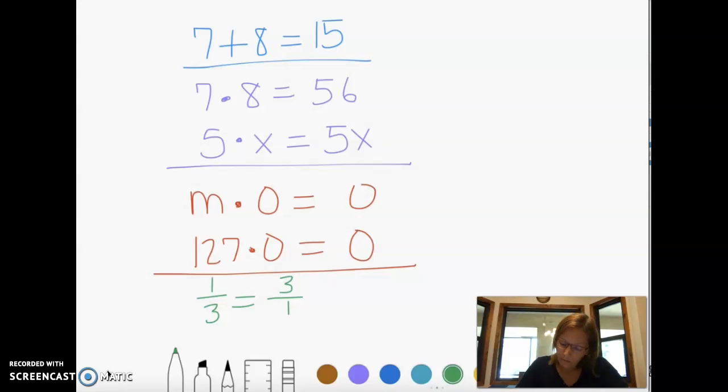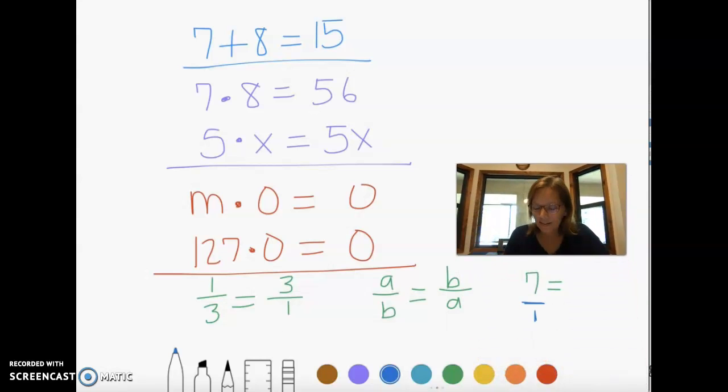The reciprocal of a over b equals b over a. I'm just flipping the fraction. And sometimes you might just see a number. Like maybe they just say 7 and tell me what the reciprocal is. So when that happens, I always remember that I have that imaginary 1 on the bottom. Oh, you can't see it because my face is in the way. Hold on. Let's see if I can move it. Hey, now you can see it. Okay.